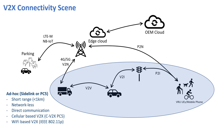There are different technology alternatives available for short-range communication — for example, the Wi-Fi standard IEEE 802.11p, or the cellular standard named C-V2X sidelink or PC5.